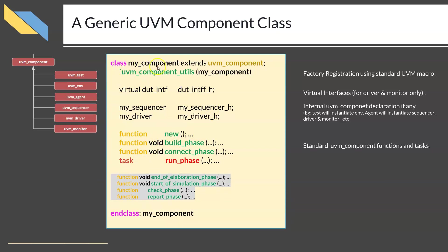First, your own class name — say here it is 'my_component' — which is extending from the corresponding UVM component. So if you are writing your test, you will be extending from UVM test. If you are writing your ENV, you will be extending from UVM ENV and so on. It is also possible to extend from UVM component itself, but as a beginner you don't need to use classes extending directly from UVM component.